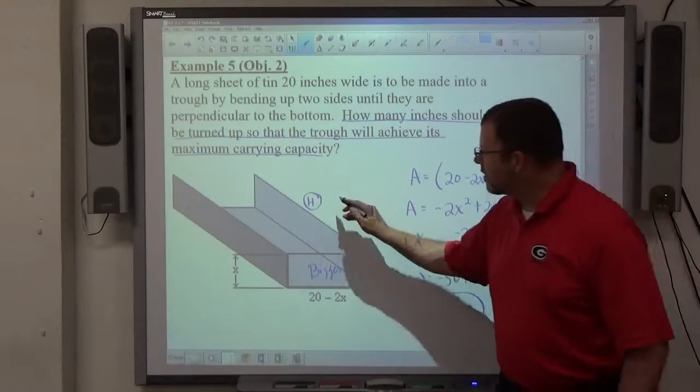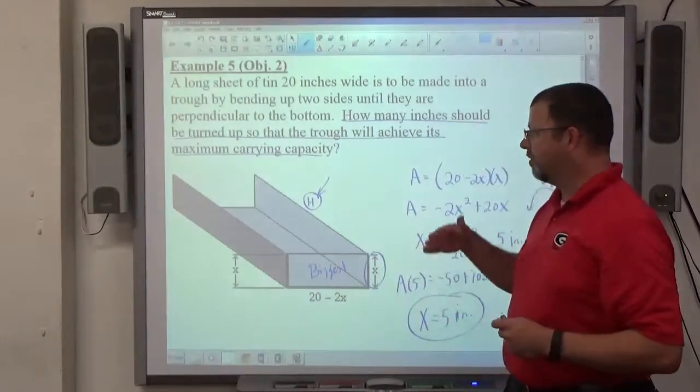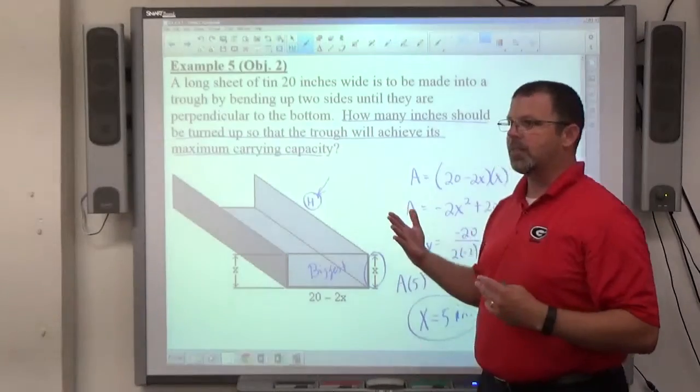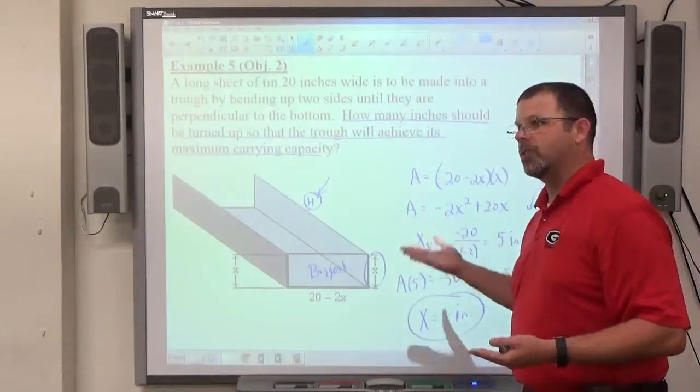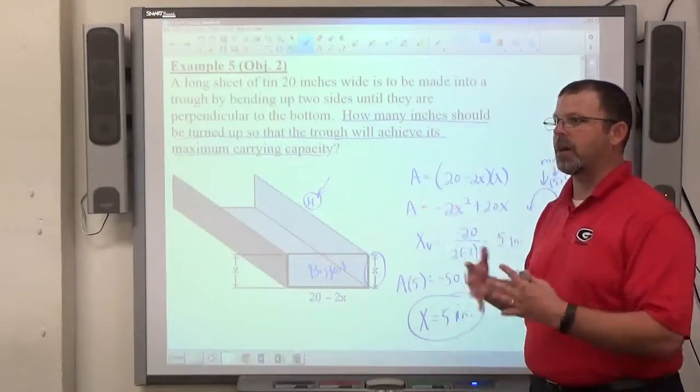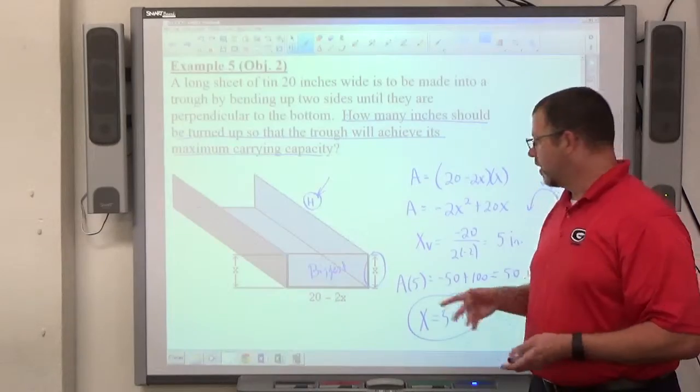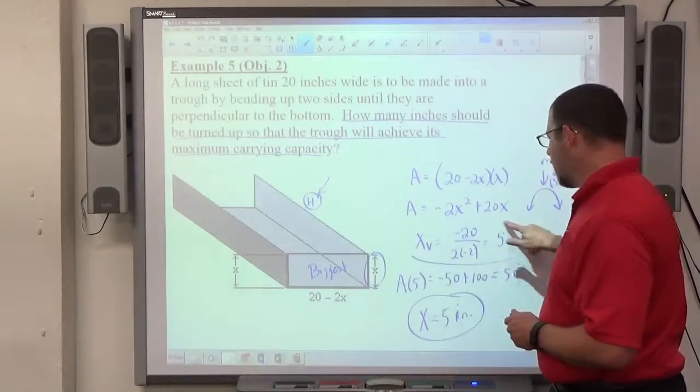If they had given me this number here, if I knew exactly how long this piece of tin was going that way, I could actually find the exact volume. And it might have said, what is the maximum capacity of this trough? And that would be a situation where the outcome of A would then be multiplied by h in order to figure out what the maximum volume is. But in this case, how many inches need to be turned up? We're looking for x. Once we got here, we were actually done with the problem.